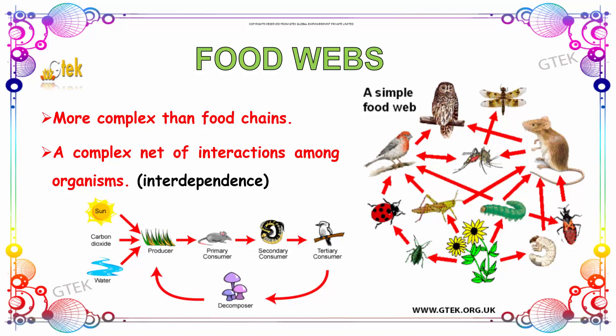Let us discuss about food webs. Food webs are more complex than food chains. It is a complex net of interaction among organisms — that is interdependence. From sun, carbon dioxide, and water, the producers take the energy.